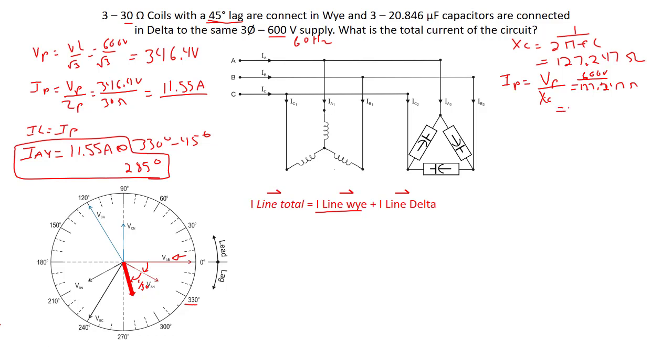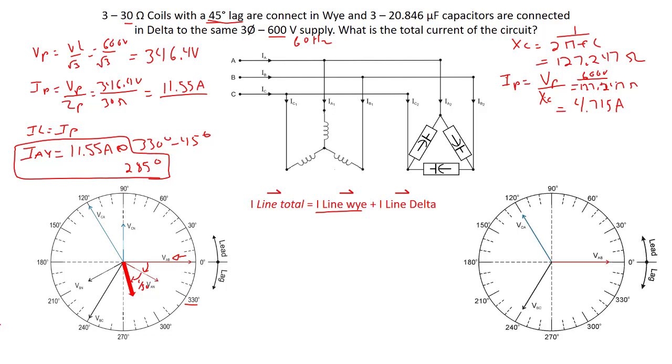Our phase current will work out to about 4.715. Let's see where we'd put that. There's our phasor diagram, here's our phase voltage VAB. We know capacitance or capacitive reactance causes current to lead by 90 degrees.